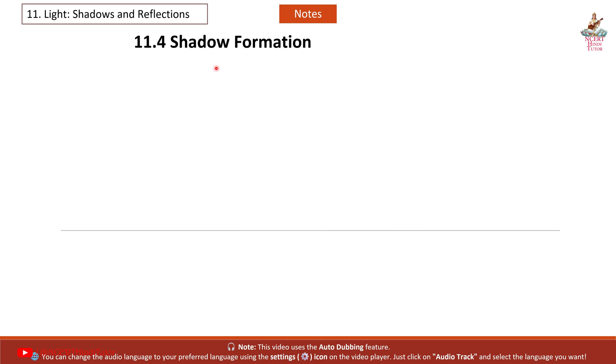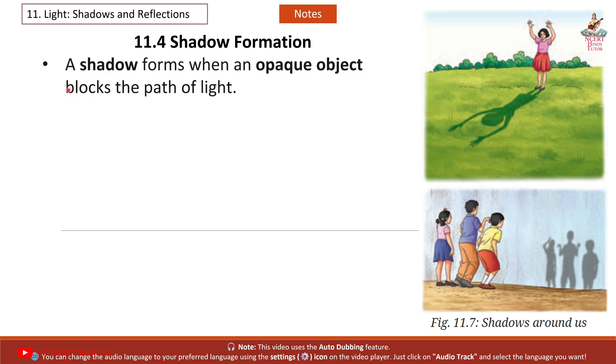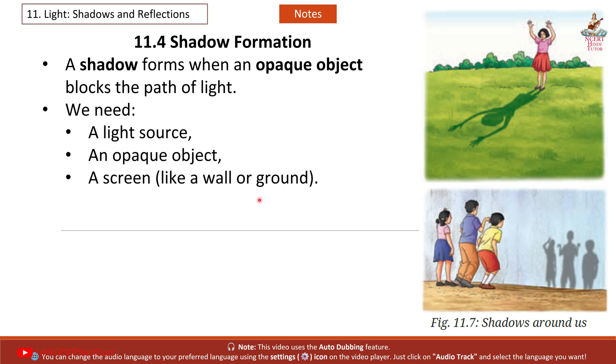11.4 Shadow Formation. A shadow forms when an opaque object blocks the path of light. We need: a light source, an opaque object, a screen like a wall or ground.